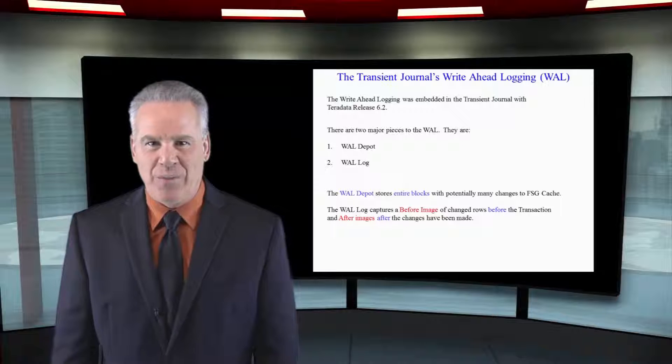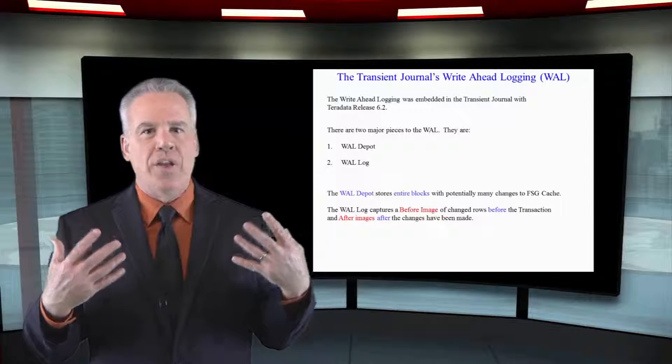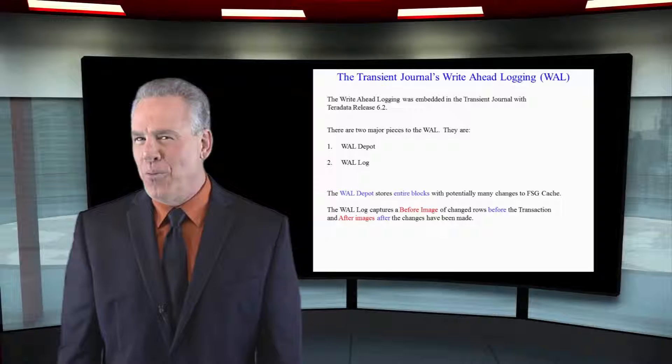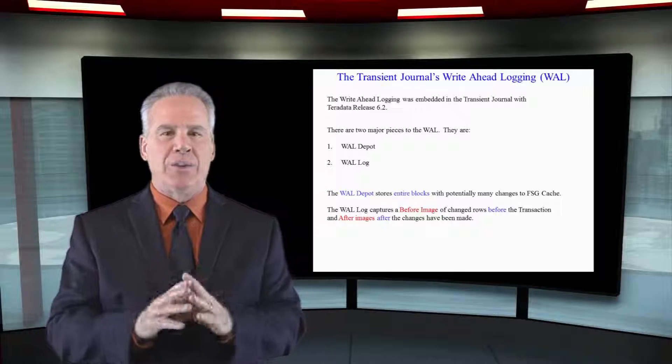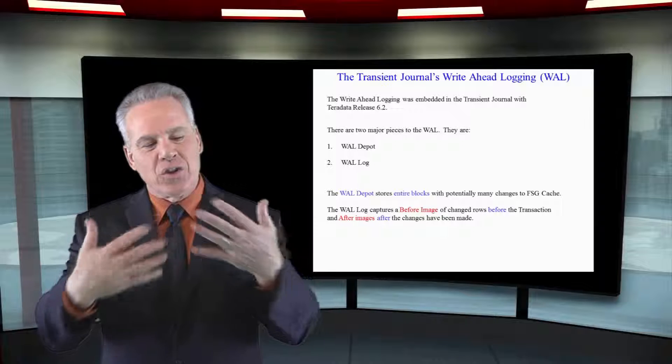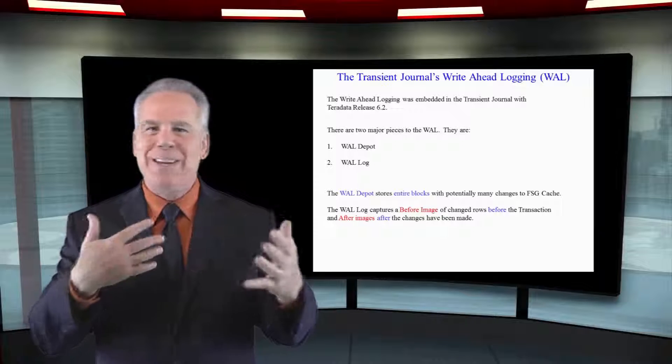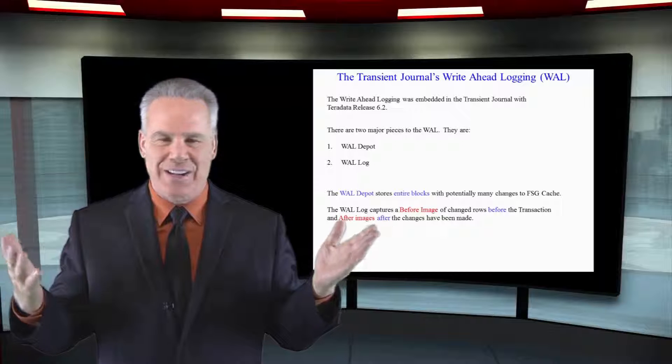In Teradata 6.2, Teradata came out with the WAL Log and the WAL Depot Write Ahead Logging. This is very similar to the Transient Journal. I don't want to say that's an interchangeable term, but I see it both ways, even in documentation today.